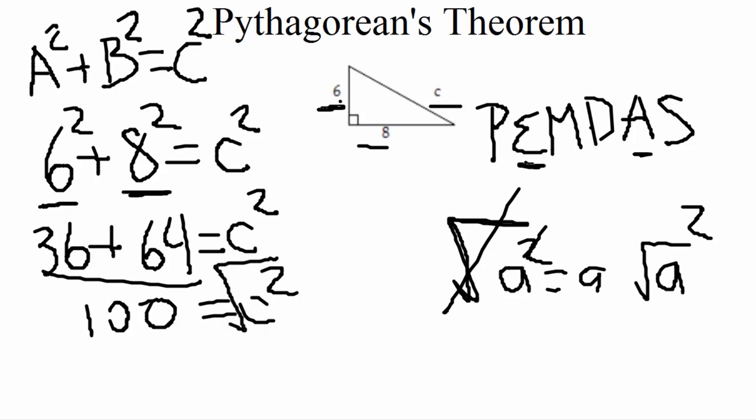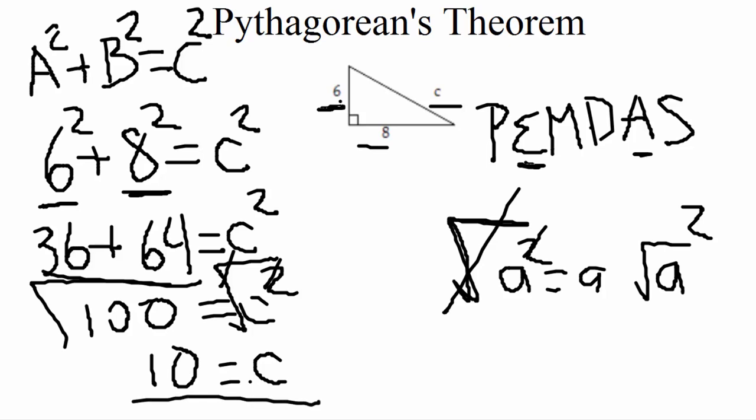On the right-hand side, the square root and the square cancel out, leaving us with c. On the left-hand side, the square root of 100 — that's a perfect square — gives us 10. So c equals 10.